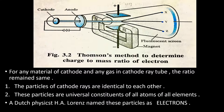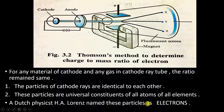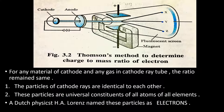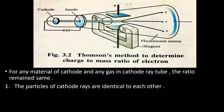Sir H.A. Lorentz, a Dutch physicist, named these particles 'electrons.' So the particles of cathode rays were named electrons. As we all know, electrons are present in the atoms of all elements — this is exactly what the second conclusion stated.